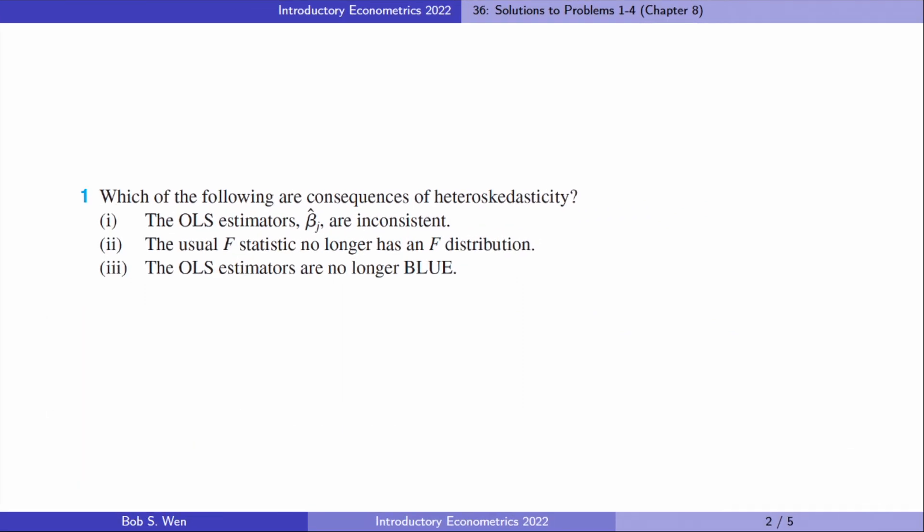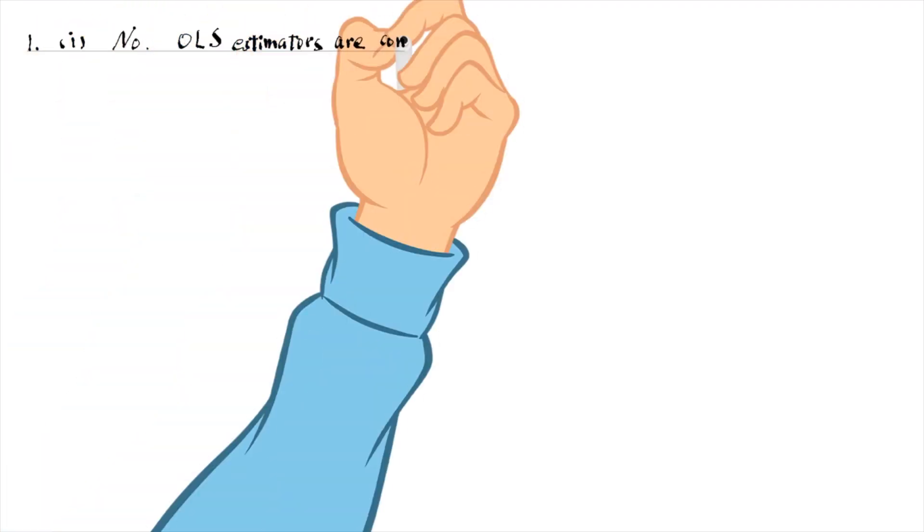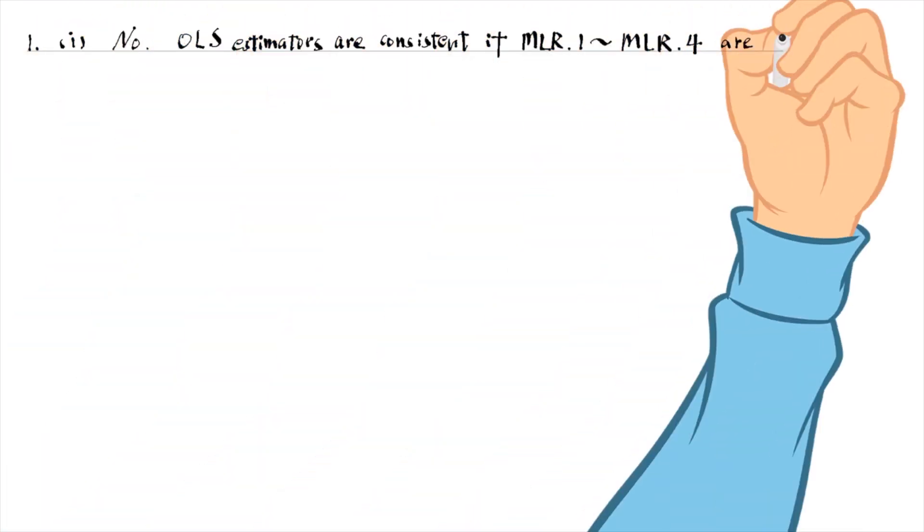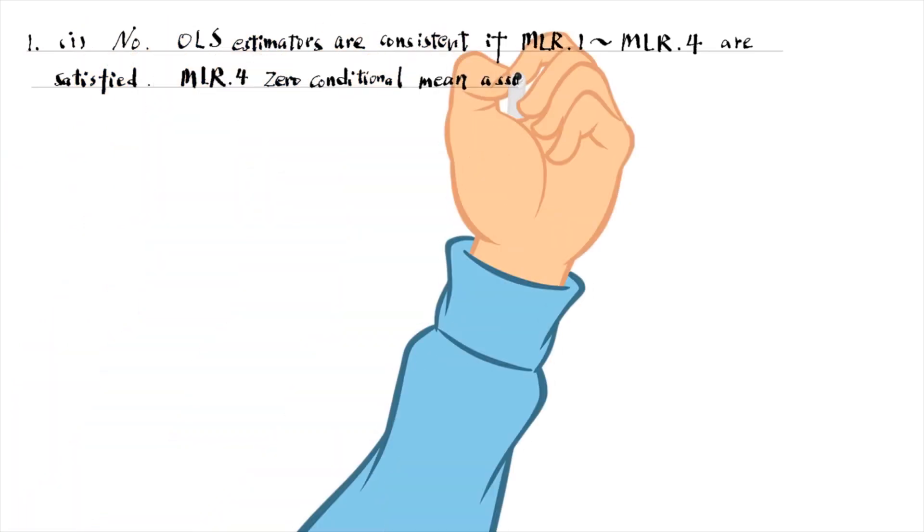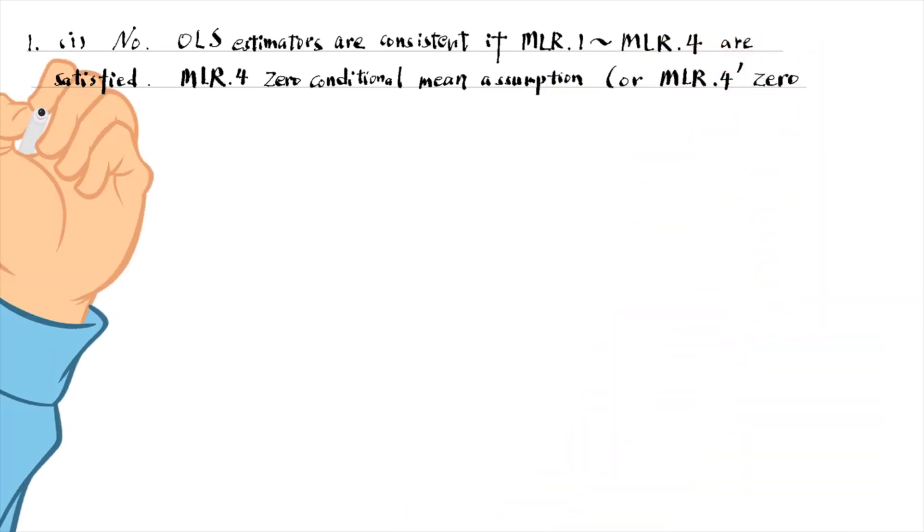We will find answers to the first four problems today. The first problem is about the properties of the OLS estimators under heteroscedasticity. My answer to part one is no. OLS estimators are consistent if the first four assumptions are satisfied. The most critical assumption to ensure consistency is the zero-correlation assumption.